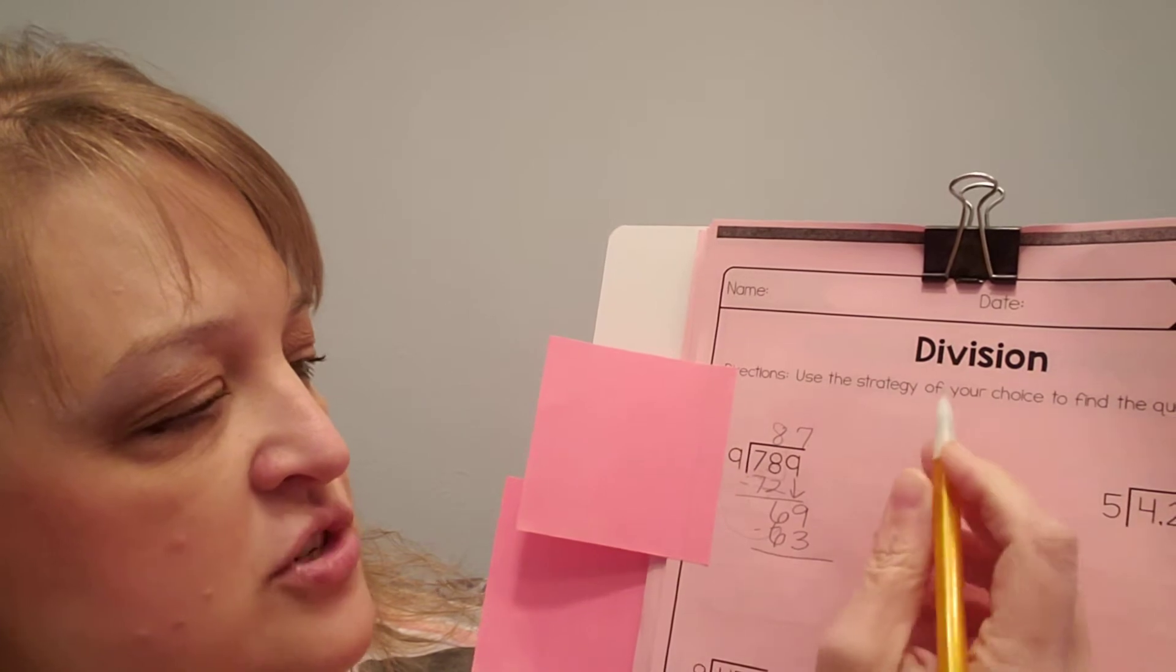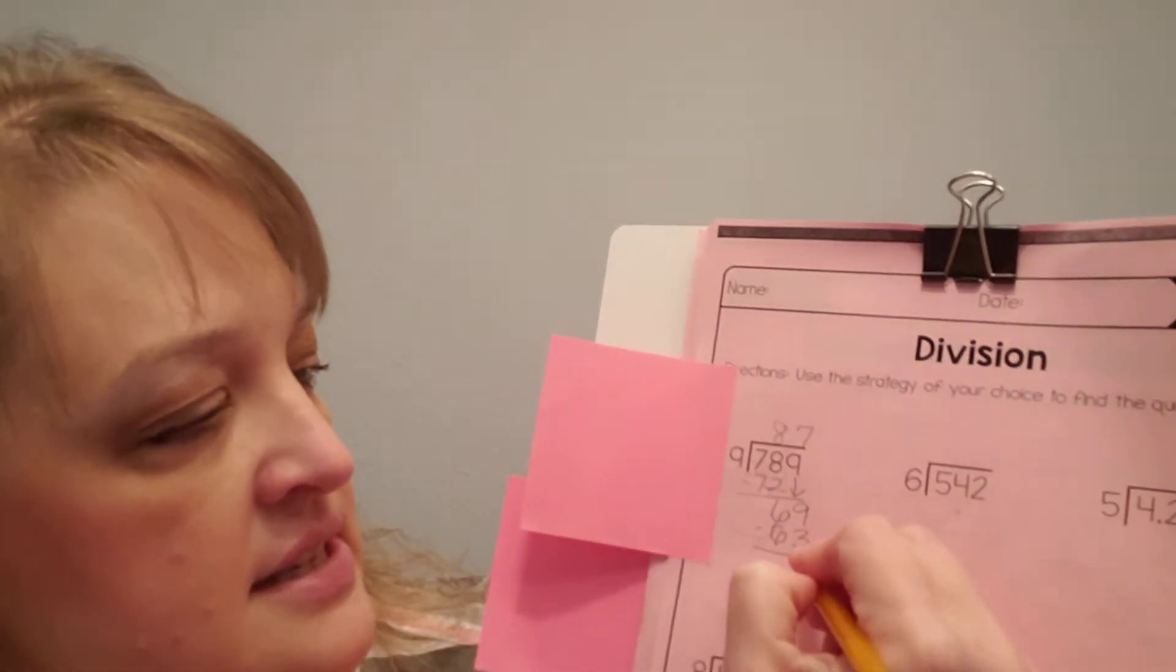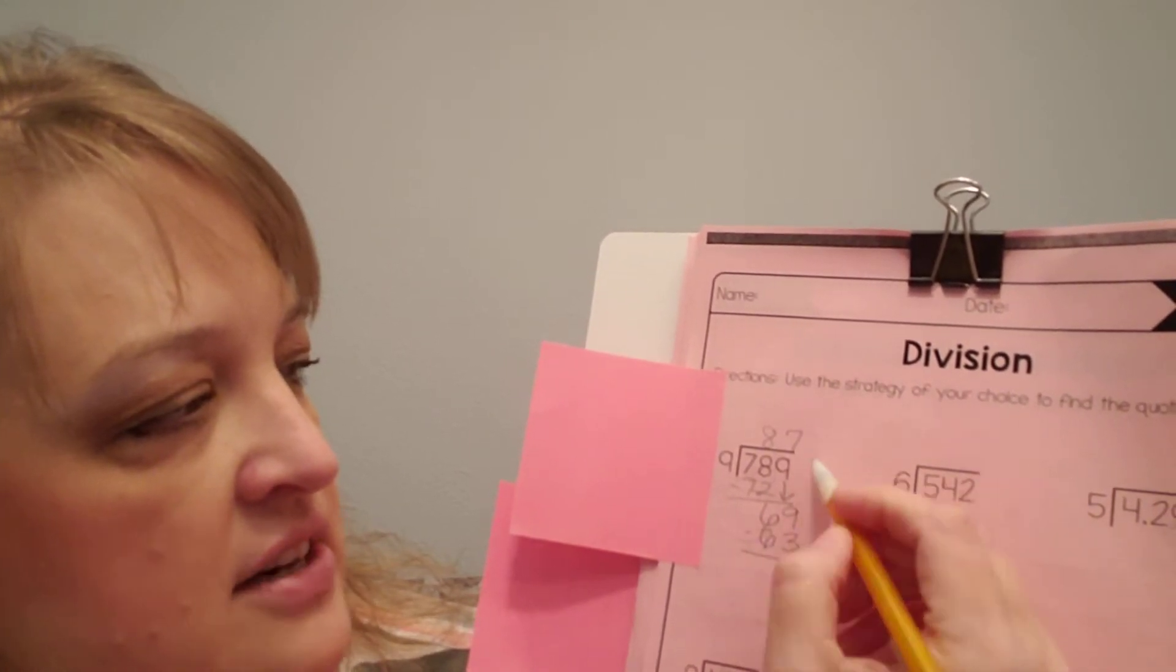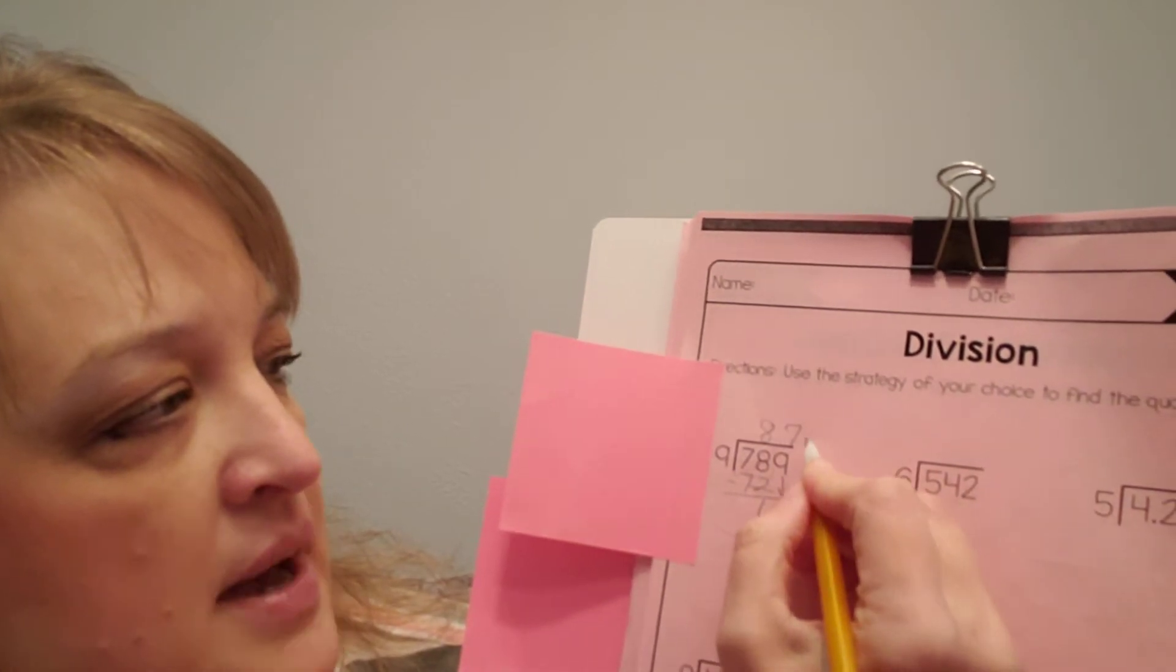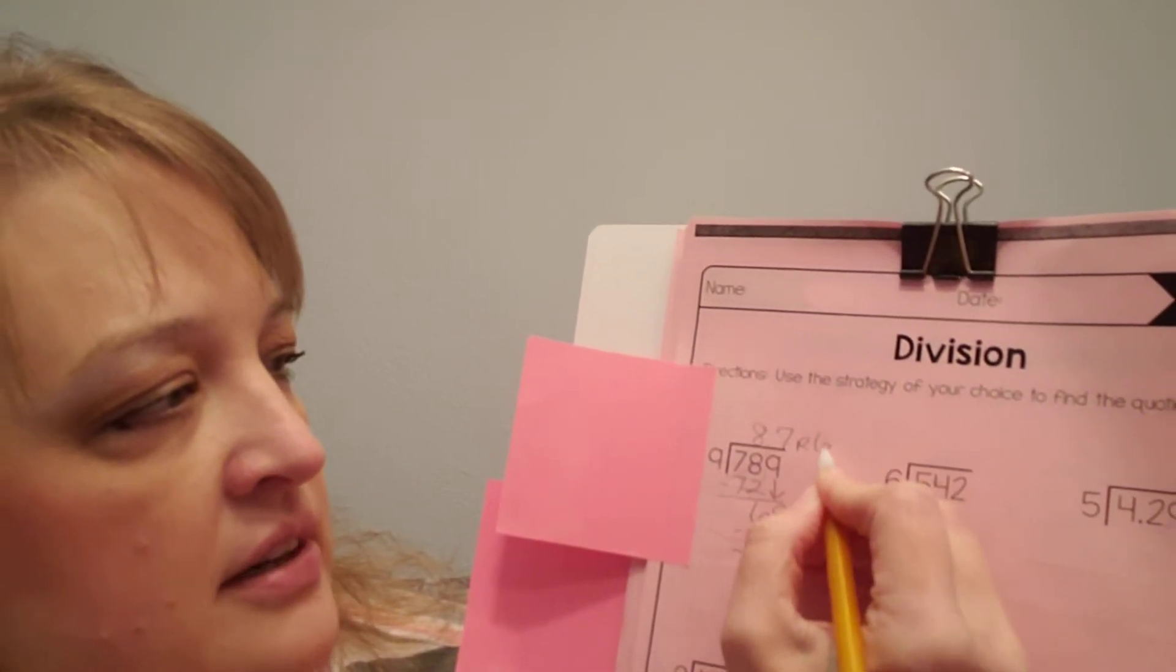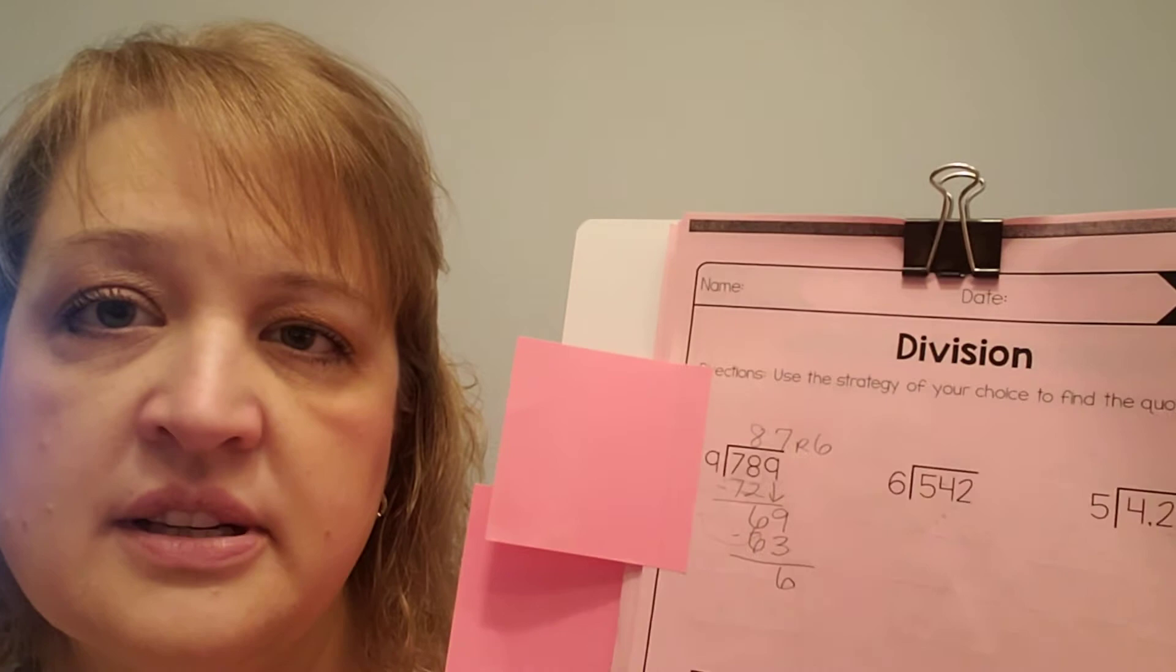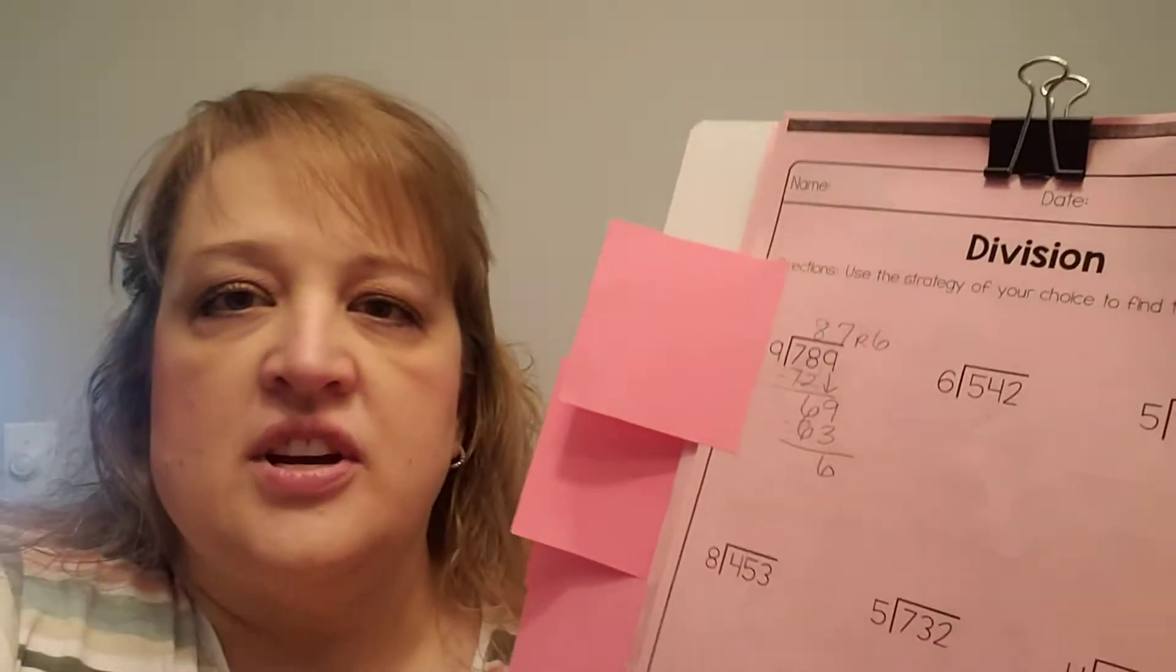So I'm going to put a 7 there, and then I'm going to multiply. 9 times 7 is 63. I'm going to subtract. 9 minus 3 is 6, and there's nothing, and that's just a 0. Is there anything else to bring down? So this 6 is my remainder. That's how much is left over. So I have 87, remainder 6.